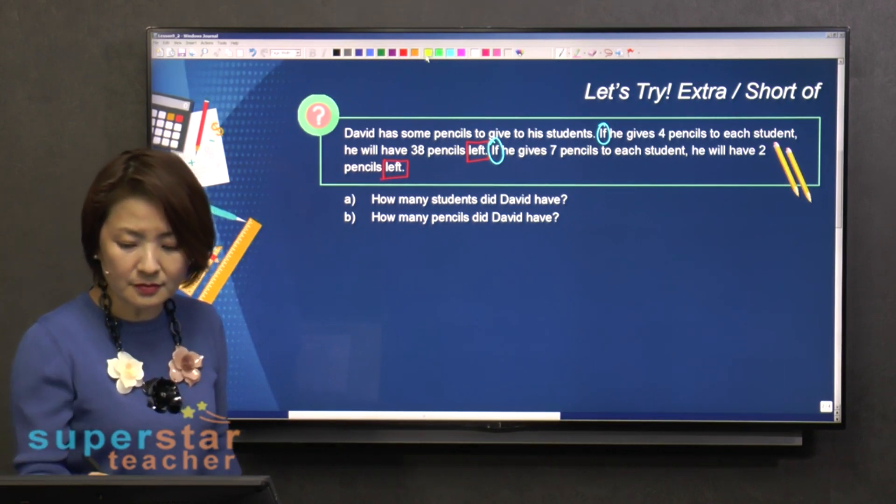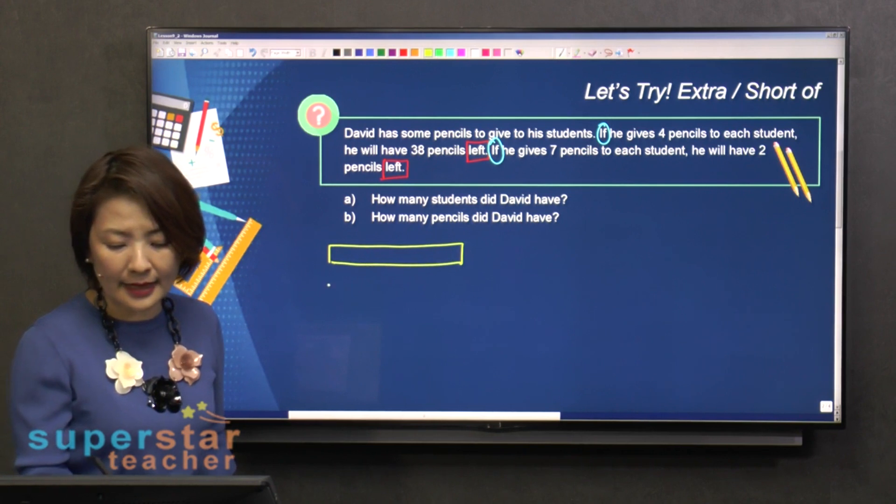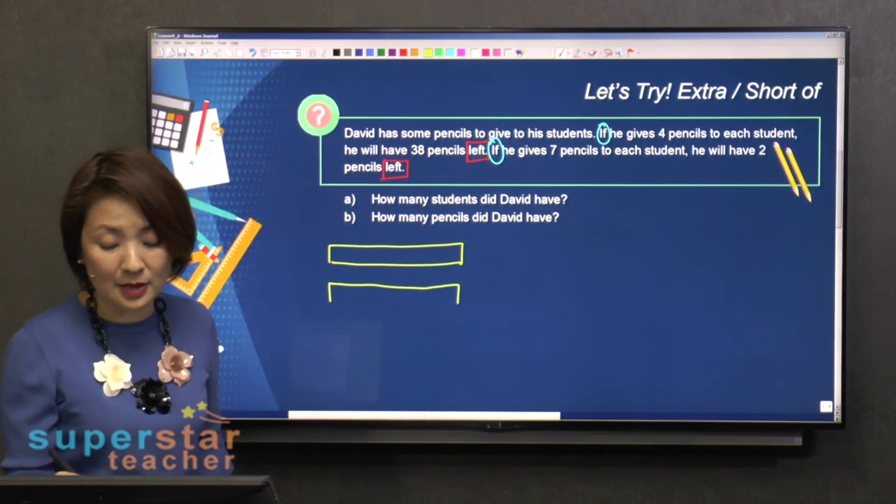So you have number of pencils and number of pencils. I draw it twice because there are two scenarios.